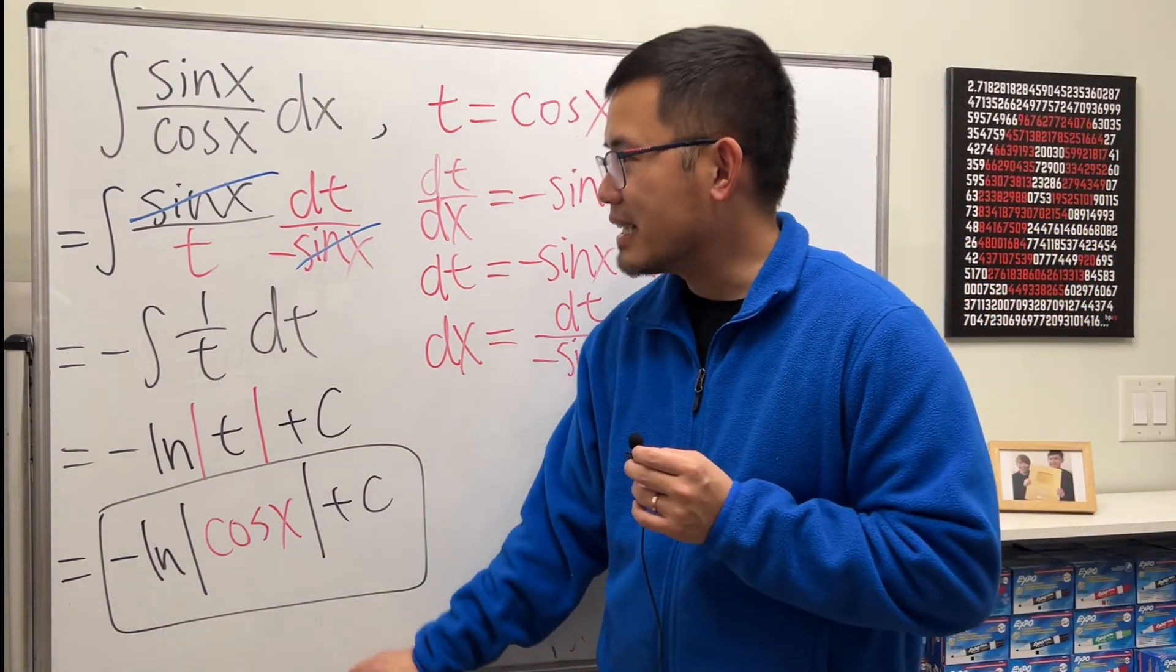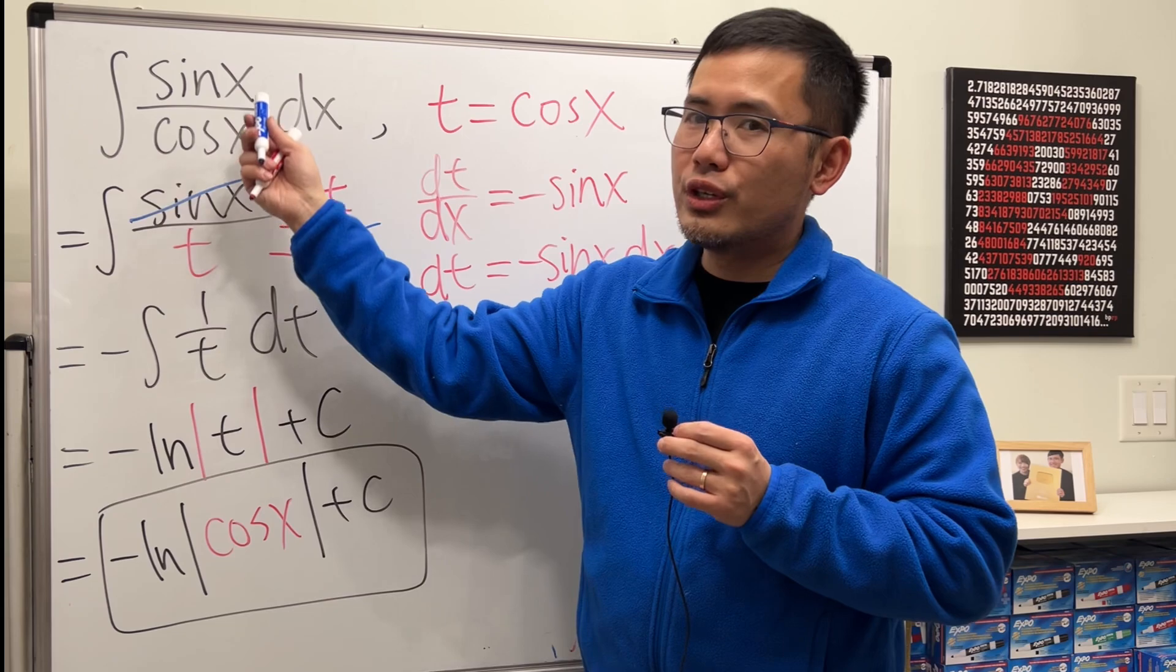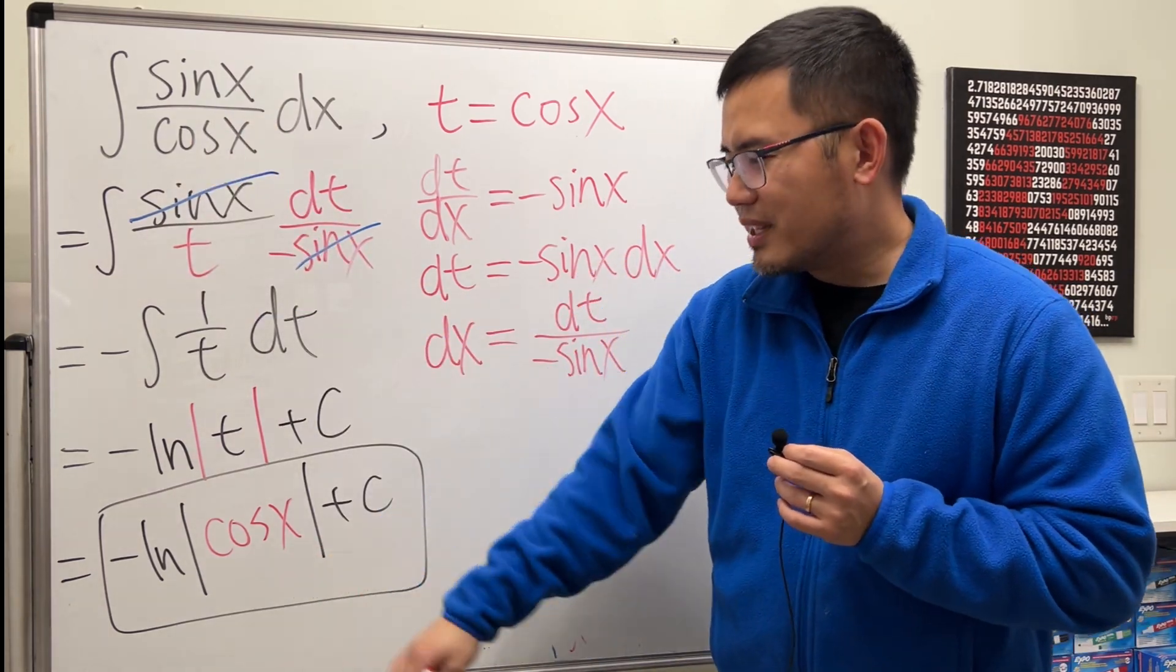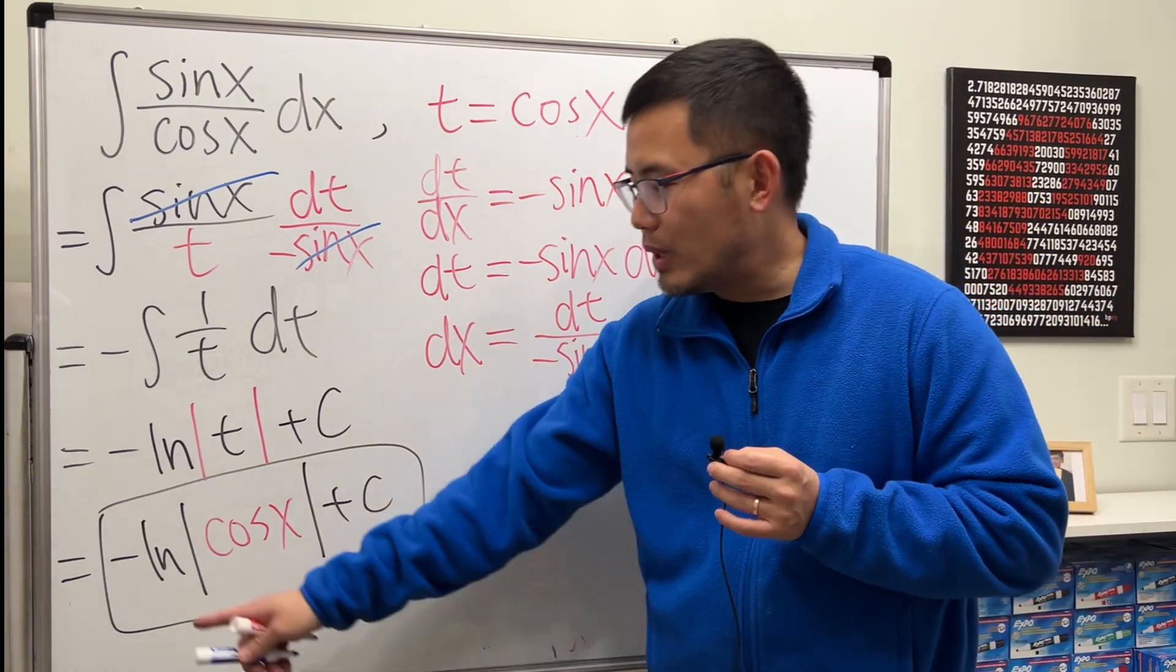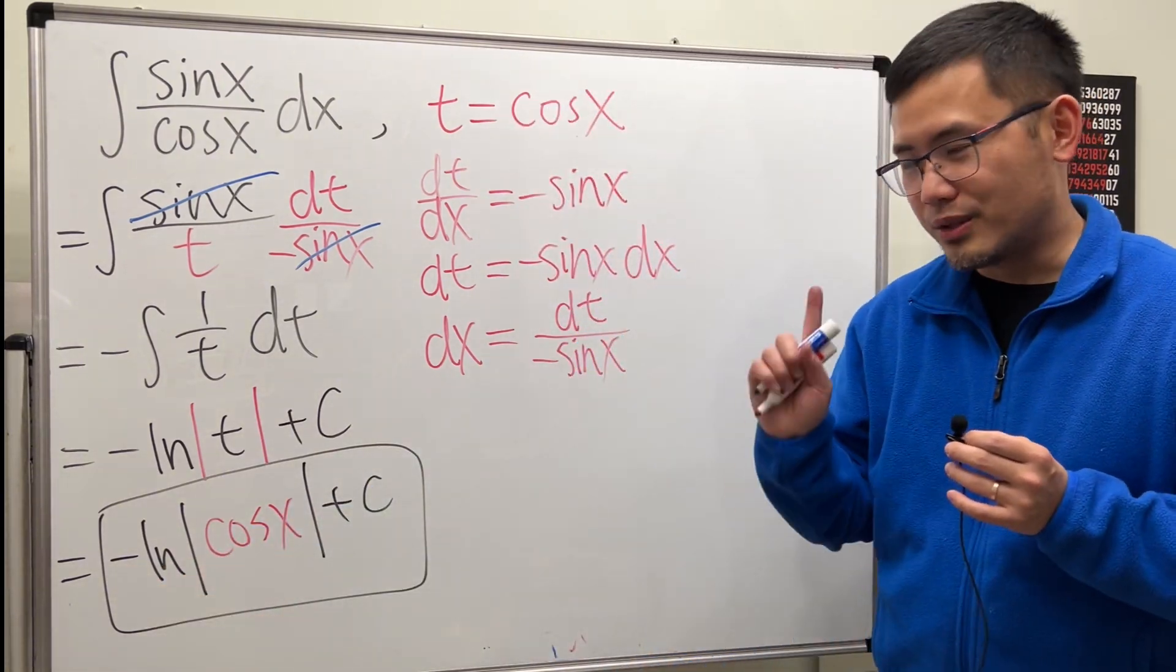However, I do want to mention that when we're integrating tangent x, this right here is not usually the standard result. It's okay. But we have a negative right here, right? So, this is what we can do.